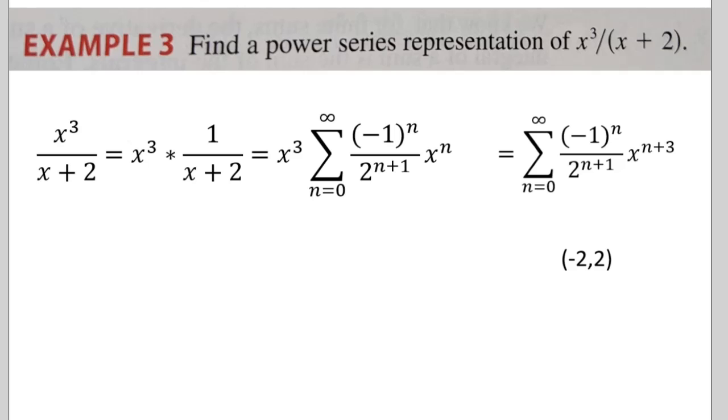For this example, I have x to the third over x plus 2. If you look at this when compared to the last one, you'll notice I still have the x plus 2 on the bottom, I just have an x to the third added to the top. So using what we already know, I know I can pull out the x to the third. So I have x to the third times 1 over x plus 2. I already know what 1 over x plus 2 is.